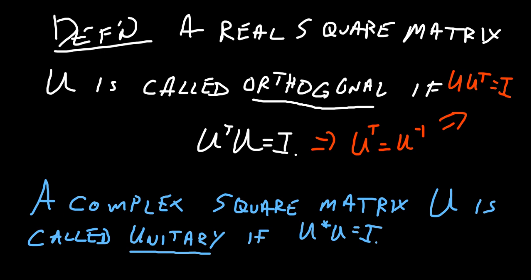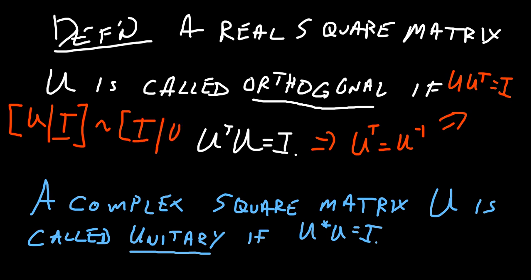You can see why someone might be interested in an orthogonal matrix. Finding the inverse of a non-singular matrix normally requires augmenting with the identity and row reducing — an expensive procedure. But for an orthogonal matrix, you just take the transpose, which is essentially free in terms of computational complexity. So finding the inverse of an orthogonal matrix is a cinch, assuming you have an orthogonal matrix.